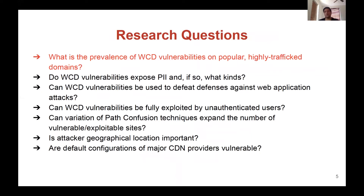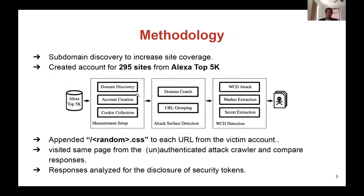There are a couple of questions around web cache deception that this research aims to cover. For example, what is the prevalence of web cache deception vulnerabilities on popular and high-traffic domains? To answer this, we present a measurement methodology for a large-scale analysis using a three-stage setup: measurement setup, attack surface detection, and web cache deception detection. In the measurement setup, we selected targets from the Alexa top 5K and extracted related subdomains to increase site coverage. We created two sets of accounts — attackers and victims — and populated the victims' accounts with predefined unique markers that can later be searched to detect successful web cache deception attacks.